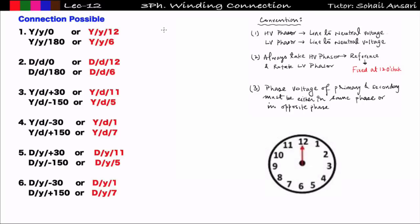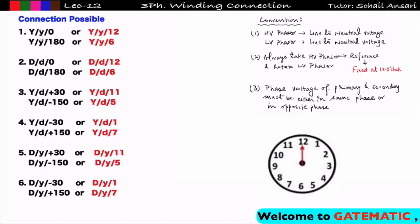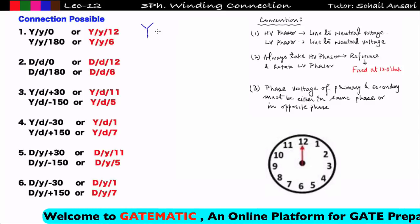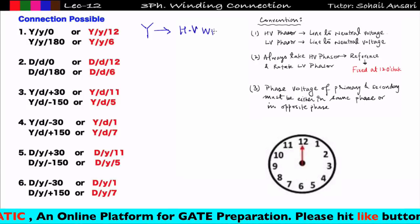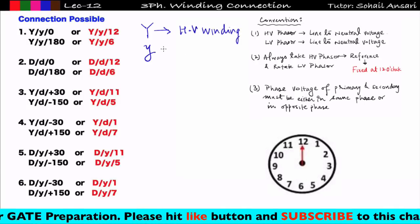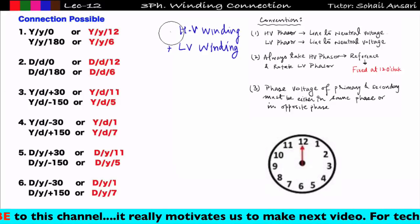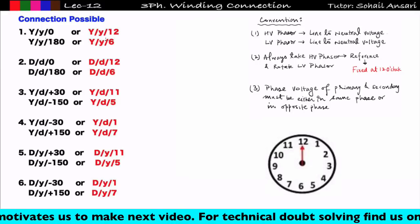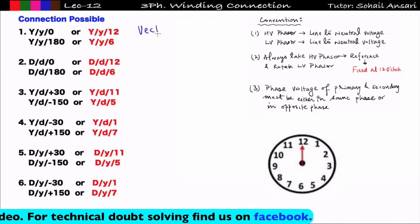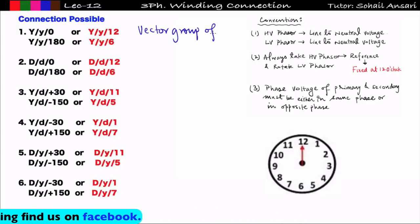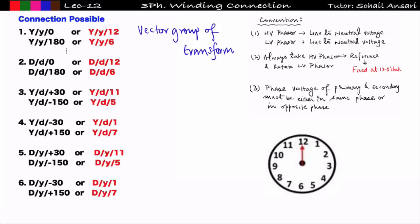Practically there are 26 types of connections possible according to American standards, but not all are in the gate exam. In gate exams, questions come from a specific set of connections. Capital Y denotes HV star winding; small y denotes LV star winding. The first connection is YY0, which can also be written in clock form as YY12.